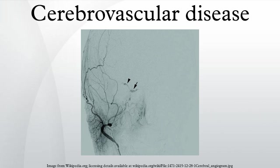Ischemic stroke: The most common type, usually caused by thrombosis of the cerebral vessels themselves, or by emboli from a proximal arterial source or the heart, that completely blocks a brain blood vessel. The neurologic signs and symptoms must last longer than 24 hours, or brain infarction is demonstrated, mainly by imaging techniques.